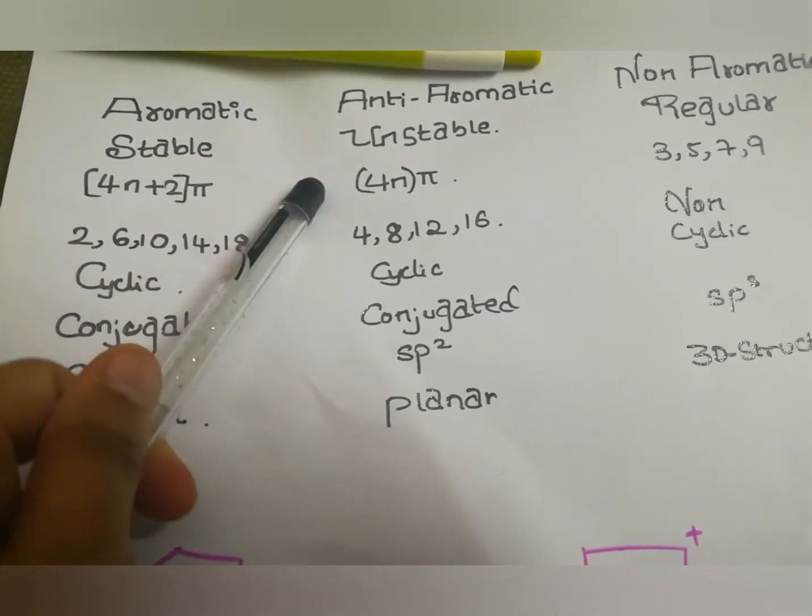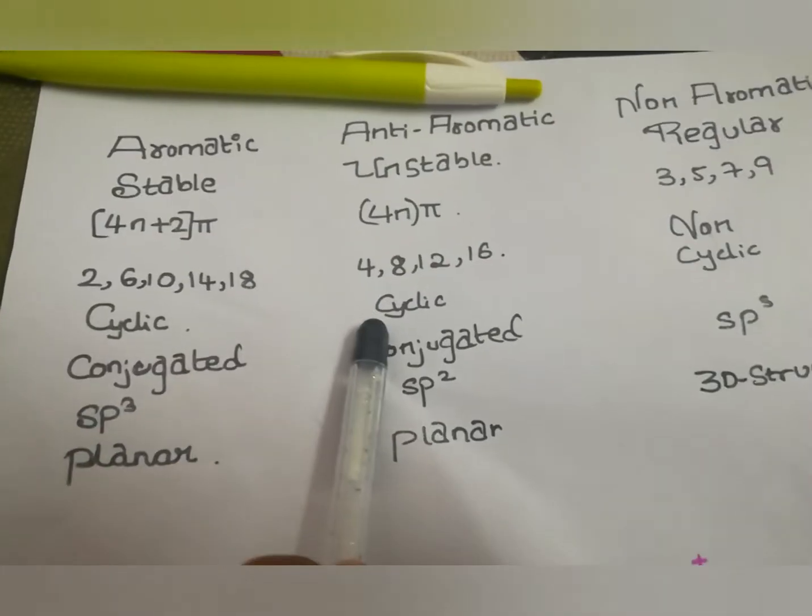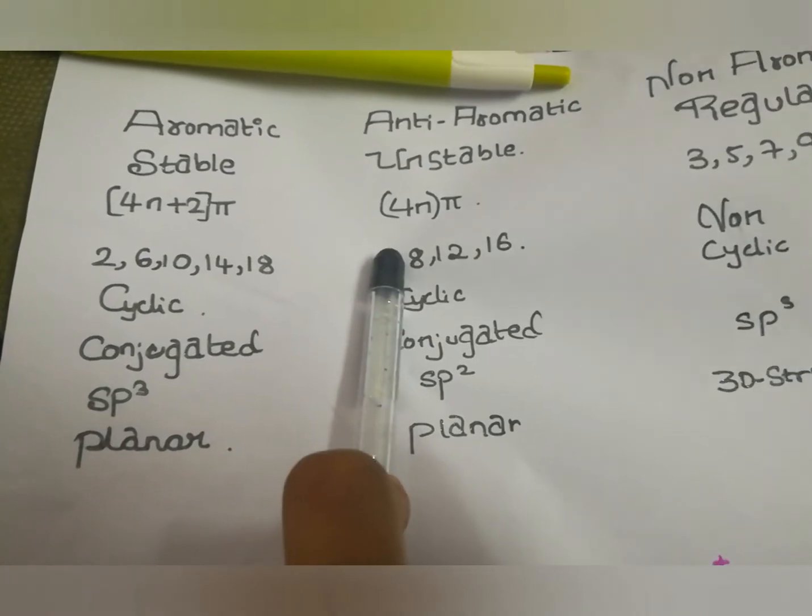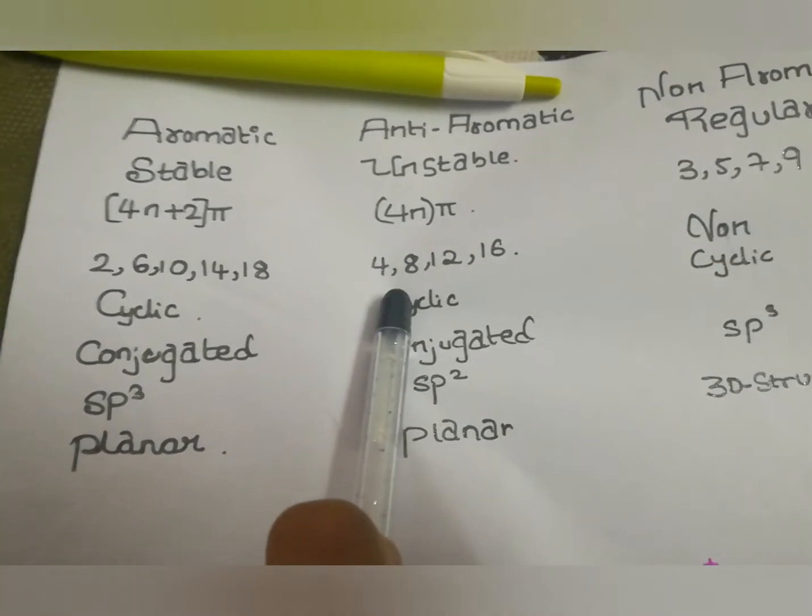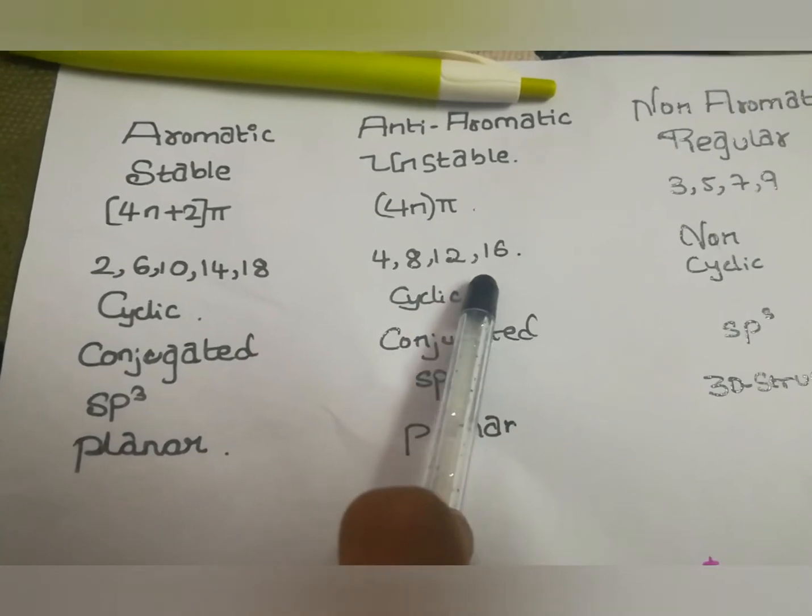Whereas, in case of anti-aromatic, it is unstable, 4n pi electrons and the integer value will be 4, 8, 12 and 16.